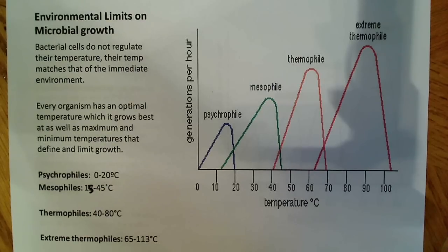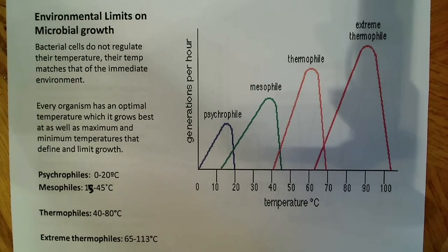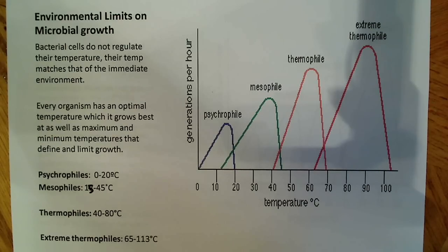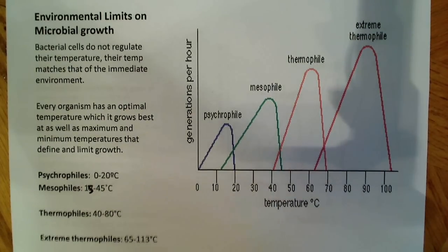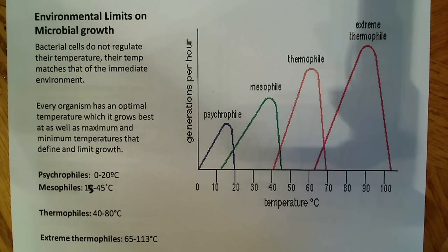The groups I have listed here are psychrophiles, which exist in very cold temperatures, 0 to 20 degrees Celsius. Then mesophiles, which include many common human pathogens, with a range of around 15 to 45 degrees Celsius. Thermophiles can withstand high temperatures of 40 to 80 degrees Celsius. And extreme thermophiles, which live in hot springs or thermal vents at the bottom of the ocean, exist between 65 and 113 degrees Celsius. You can see these represented on the graph in color, showing each group's generation times in relation to temperature.